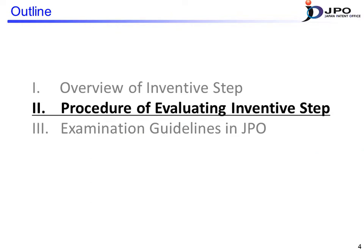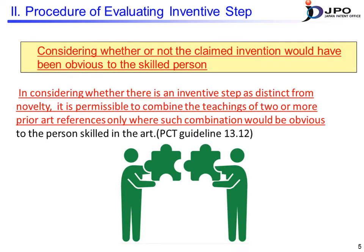Now let's look at the procedure of evaluating inventive step. Determining inventive step can be seen as having the same meaning as considering whether the claimed invention is obvious to a person skilled in the art. When the examiner considers the inventive step of the claimed invention, the PCT guidelines state that two or more examples of prior art are allowed to be combined, if the combination is obvious to a person skilled in the art. Whether a claimed invention is novel or not is determined by comparing the claimed invention with a single item of prior art, whereas whether a claimed invention involves an inventive step or not is determined based on one or more prior art references.